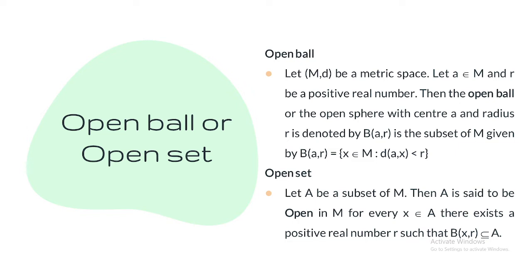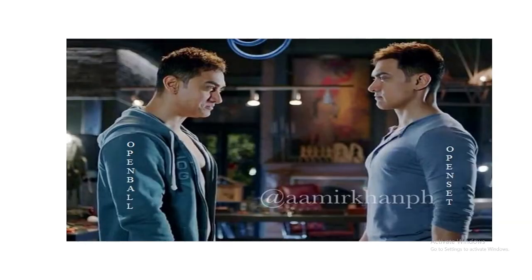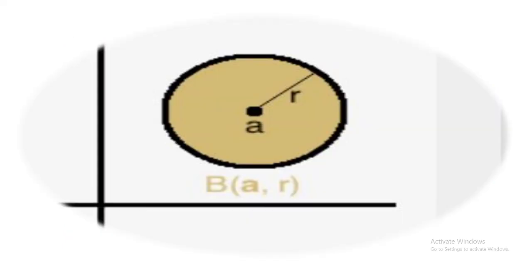The open ball concept is used to define the open set. A set A is said to be open if for every element x belonging to A, we can find an open ball B(x, r) with center x and some radius r which is properly contained in A. This must hold for every x in A — we have to identify an open ball inside that set for each element. Then only is the set A called an open set. In a metric space, it can be easily verified that every open ball is an open set.